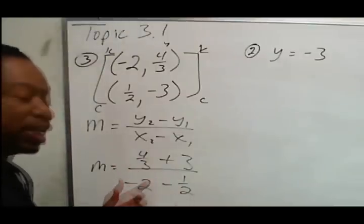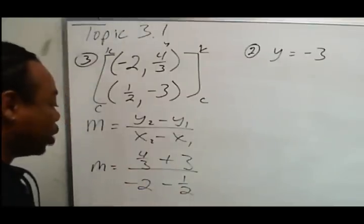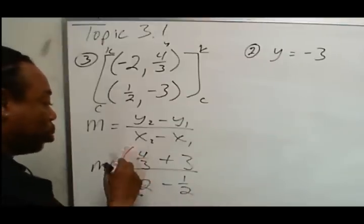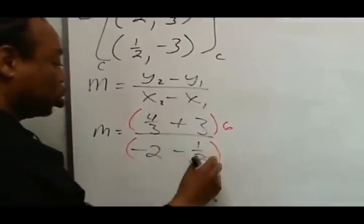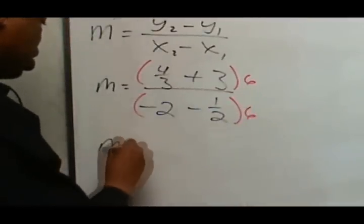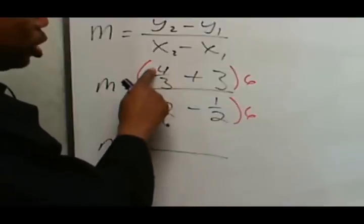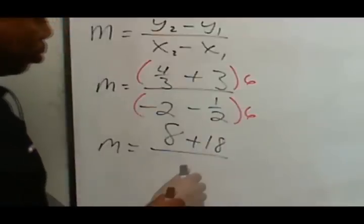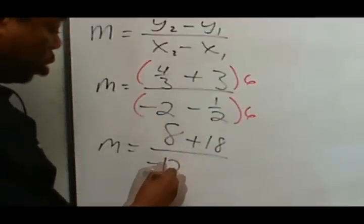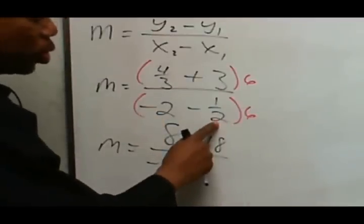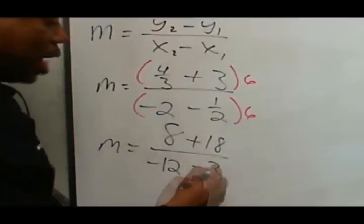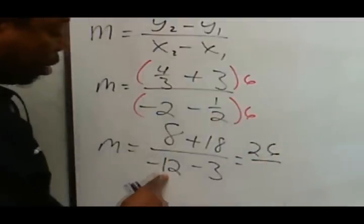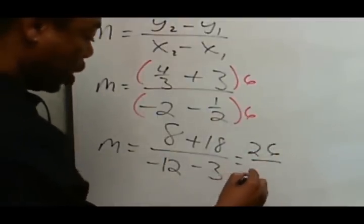Now what we have is a complex rational. Looking at all the denominators — 3, 1, 1, and 2 — the common denominator will be 6. So I'm going to multiply by the least common denominator, which is 6. When I distribute: 6 divided by 3 is 2, times 4 is 8. 6 times 3 is 18. 6 times negative 2 is negative 12. 6 divided by 2 is 3, times negative 1 is negative 3. Adding 8 and 18 gives 26.